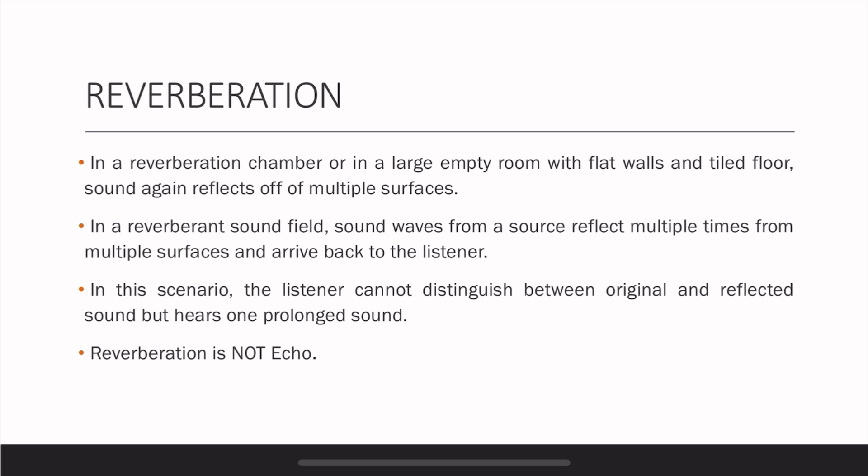Sound reflects off of multiple surfaces and arrives at the listener from multiple directions. So the final sound that a listener would hear is a mixture of all these reflections. It is not possible to distinguish anymore between the reflected sound and the original sound — it's just one complete, prolonged sound. This effect is called reverberation. Reverberation is not echo because echo is one true reflection and not multiple reflections.